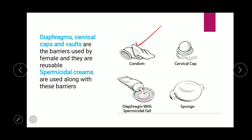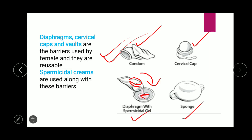Diaphragm, cervical caps, and vaults are barriers used by females — always remember these are for female use and are reusable. Spermicidal creams are used along with these barriers. Spermicidal means sperm-killing — the creams kill the sperm. Diaphragm, cervical caps, and vaults are always used together with spermicidal gel or cream.